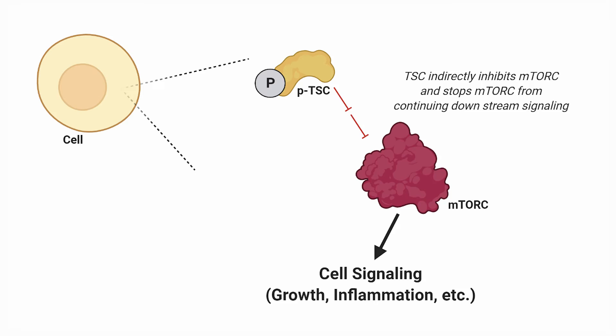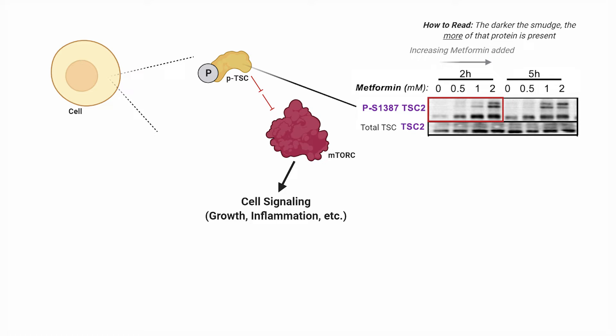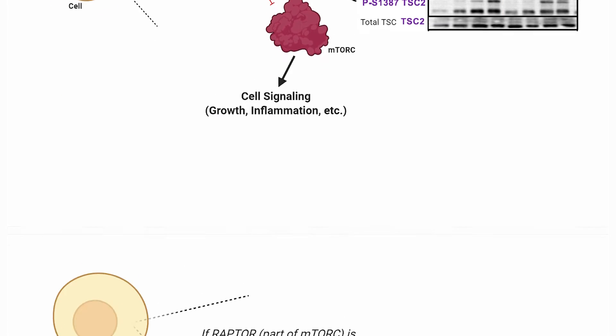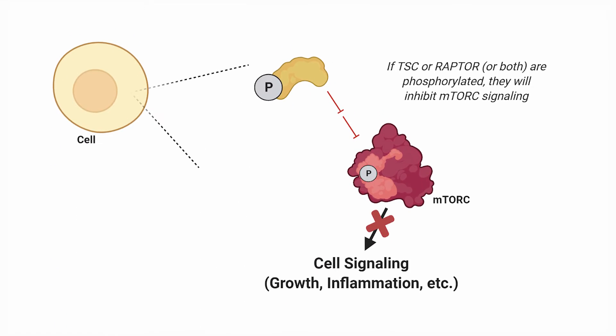So what are these changes? Here we're looking at protein levels of a series of different proteins including their phosphorylated states. In some cases this activates these proteins, in other situations it deactivates them. TSC is a downstream protein that regulates another master protein known as mTOR complex. mTOR is chiefly responsible for cell growth, so we see increased phosphorylation — in this case activation — of TSC with the addition of increasing amounts of metformin. Not only that, a subunit known as raptor regulates mTOR. If raptor is phosphorylated, it deactivates mTOR. So if TSC or raptor are phosphorylated, they decrease mTOR activity.